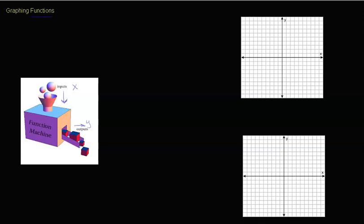In these problems, remember how we talked about functions — you have something like y equals 3x. So your output equals 3x. Let's make a table for this: X is our input and Y is our output.